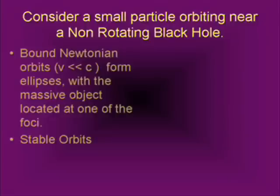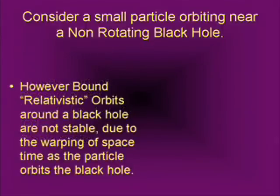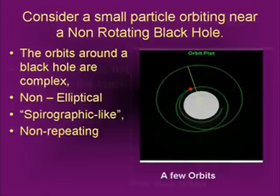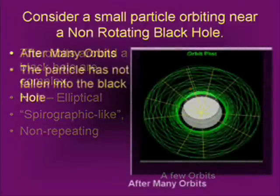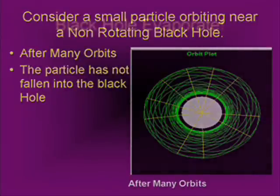Consider first a bound Newtonian orbit — a particle moving through the orbits we normally know, for example the Earth around the Sun. These are stable orbits. However, a bound relativistic orbit is quite different. It doesn't have a nice foci; it's not elliptical. In fact, it's more like a non-repeatable, spirographic-like pattern — if you remember that toy. It's a non-repeating pattern. If you carry the simulation out through many orbits, there's an inner bound and an outer bound. The particle is bounded in some radial range outside the event horizon and will never fall in because its energy is too high. So black holes don't have to capture everything.